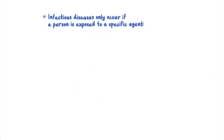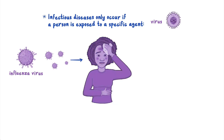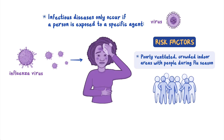Infectious diseases only occur if a person is exposed to a specific infectious agent, such as a virus. So, to get the flu, you must be exposed to the influenza virus. Because the flu is a respiratory disease, risk factors such as being in poorly ventilated, crowded indoor areas with people during flu season increase the risk for exposure and developing the flu.